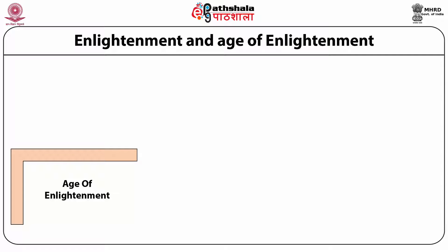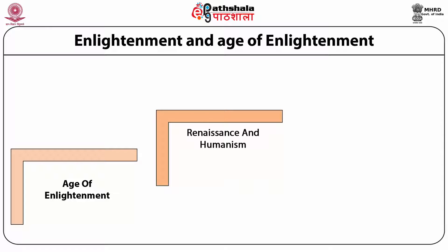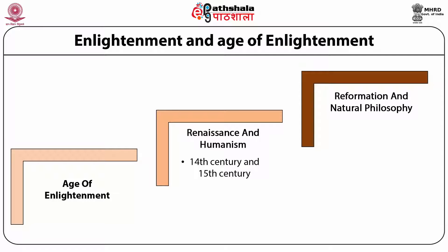Before we understand the age of Enlightenment, one has to also understand the other phases of historical periods that led into it. Firstly, it was Renaissance and Humanism, which started sometime around the 14th to 15th century — a completely revolutionary thinking which dethroned the church and religious-based organizations. This led to a movement called Renaissance and also to Humanism, emphasizing that human capabilities and humanity are of prime importance, which further led to Reformation and Natural Philosophy, flourishing during the 16th and 17th centuries. These two phases paved the way to the age of Enlightenment.